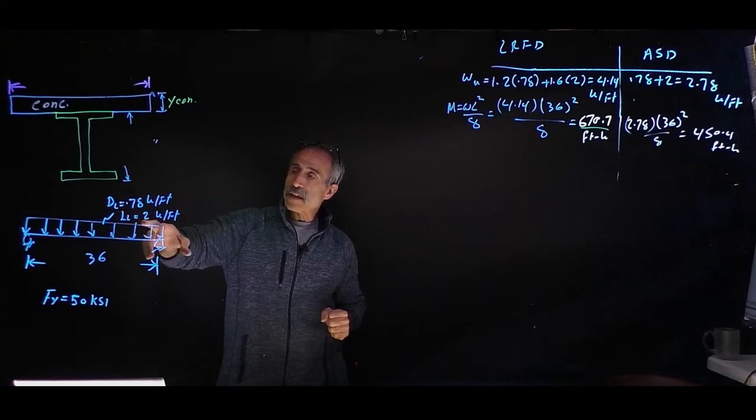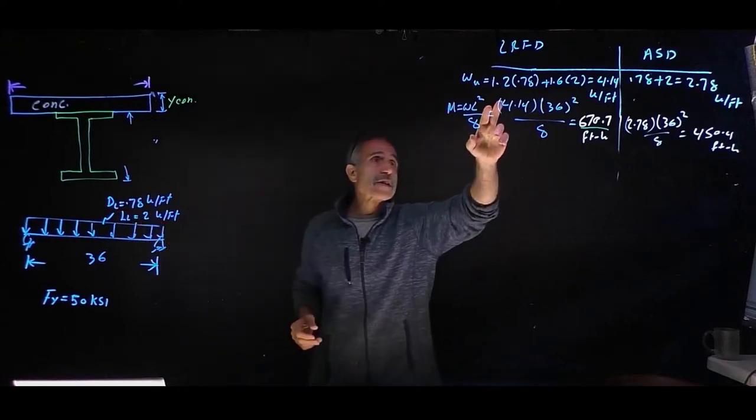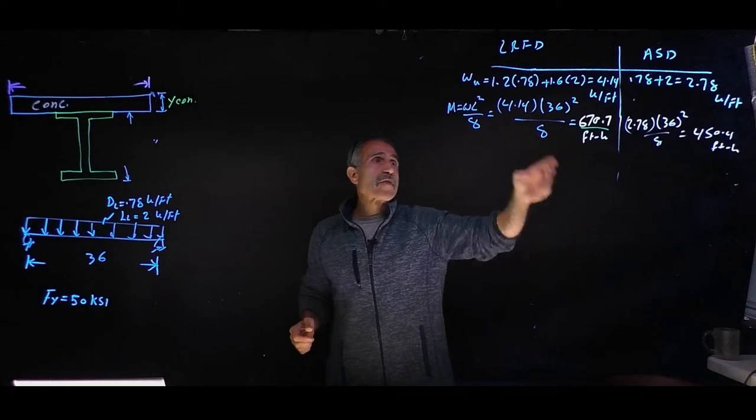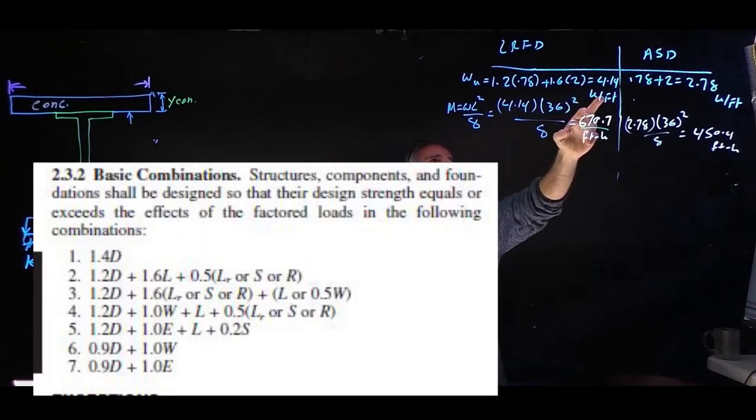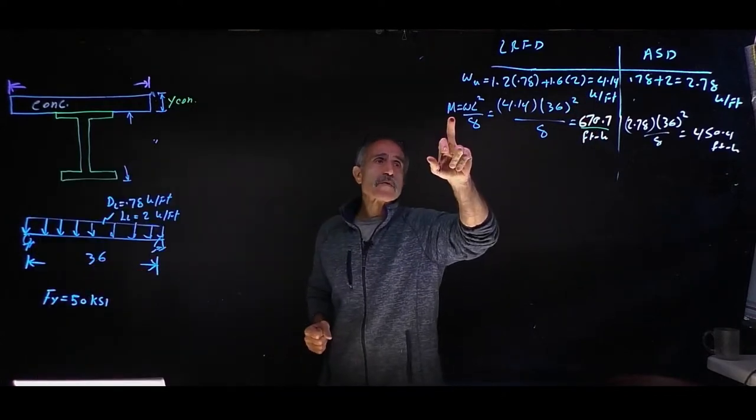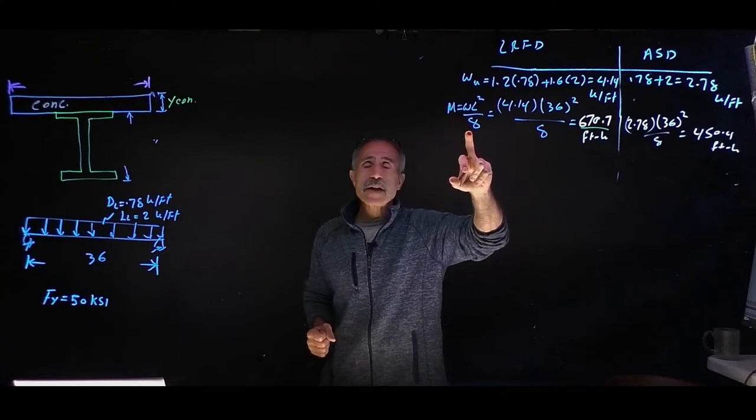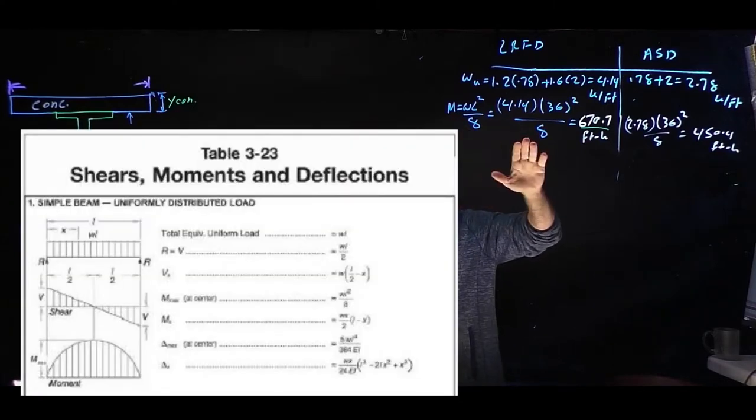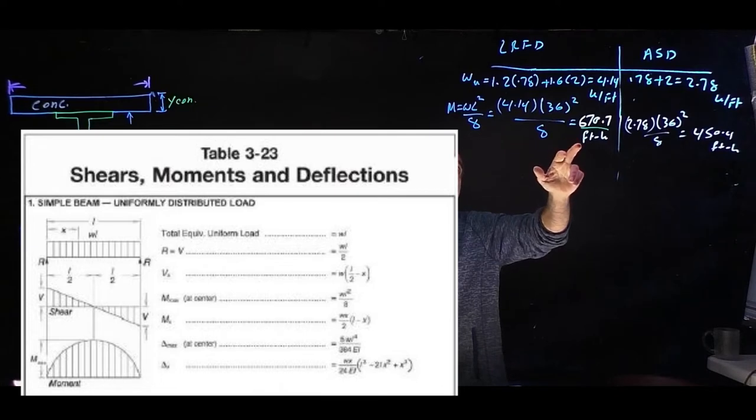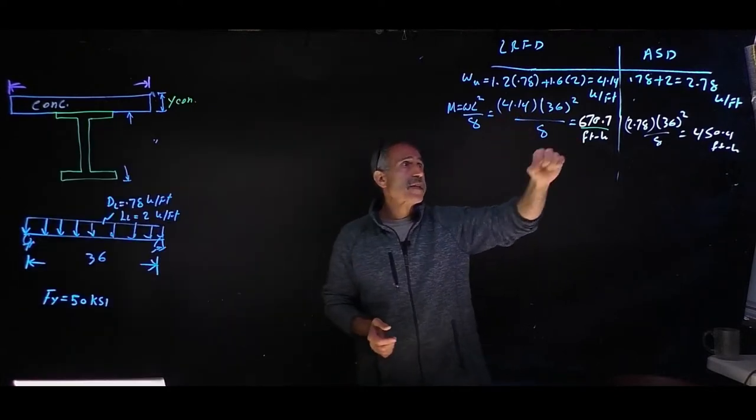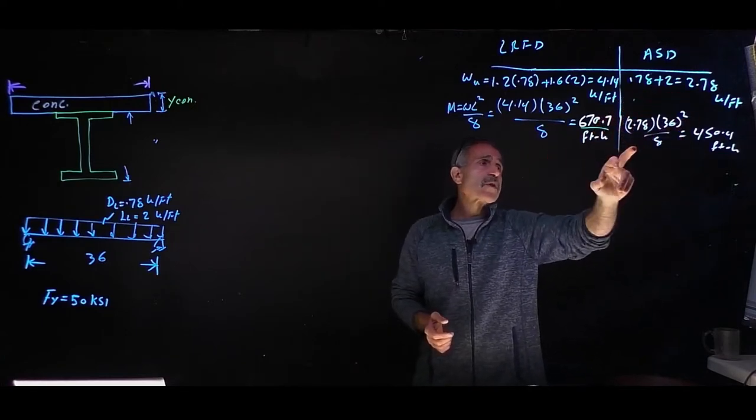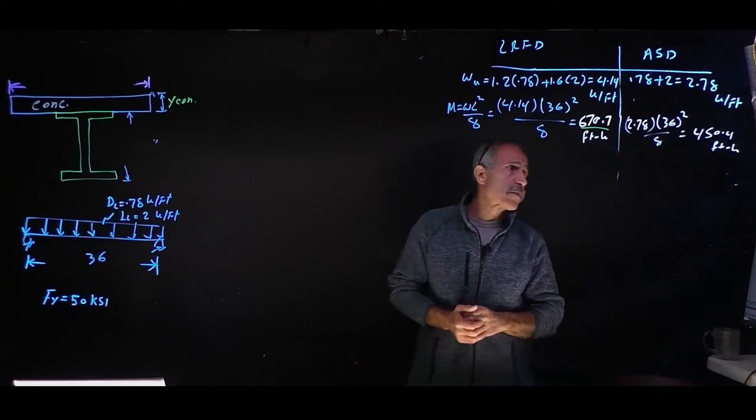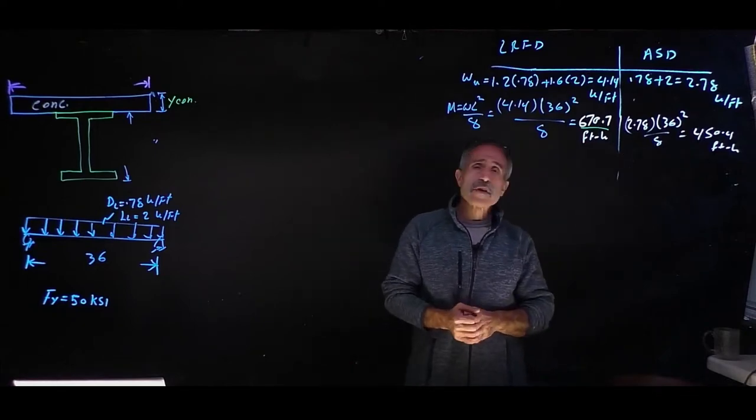We're going to calculate the loads. Our dead load is 0.78, live load is 2 kip. In LRFD, 1.2 times 0.78 plus 1.6 times live load comes out to 4.14. Our maximum moment M equals WL squared divided by 8, which comes out to 670.7 foot-kip. In allowable stress design, we add both loads and the moment comes out to 450.4 foot-kip.